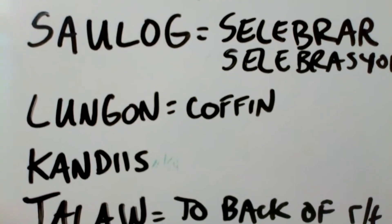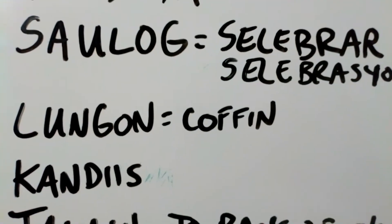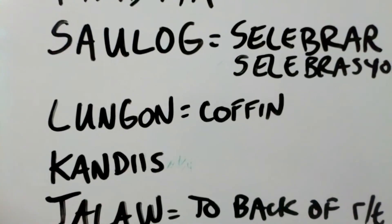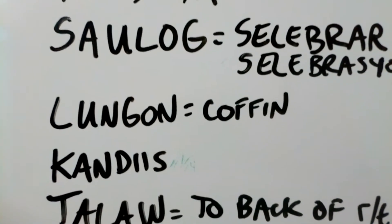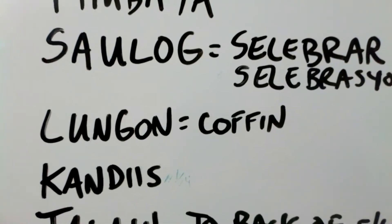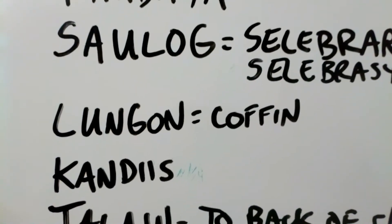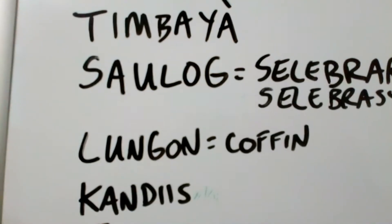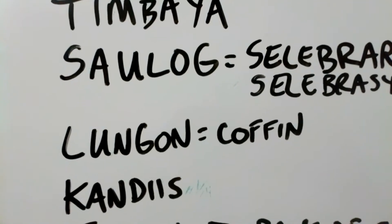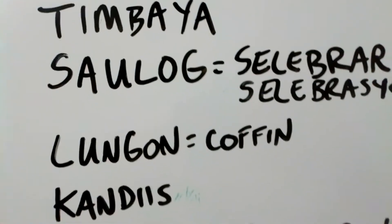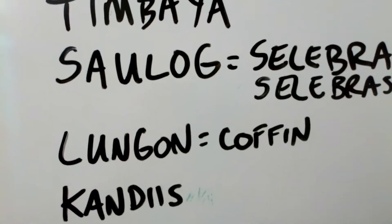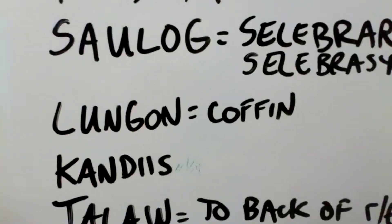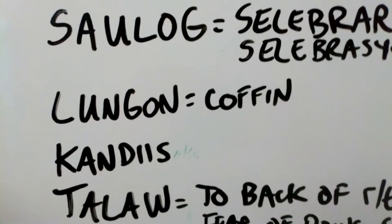The next word we have is lungon — and lungon is coffin. A coffin, like when you're going to bury someone in the earth, you put them in a coffin or lungon. Butang ang lawas sa lungon — put the body inside the coffin. And usually we associate lungon with lubog. Lubog means to bury something, like the coffin is getting buried. Lubog, paglubog.